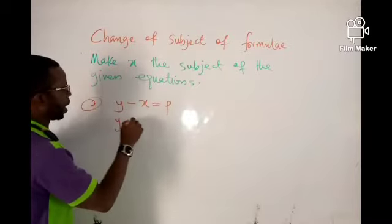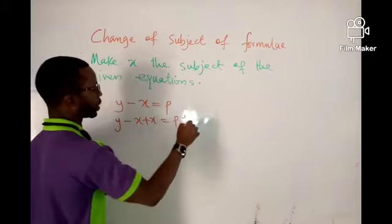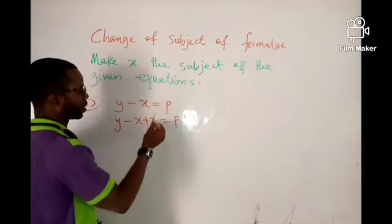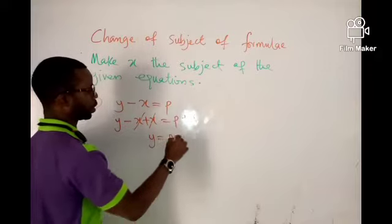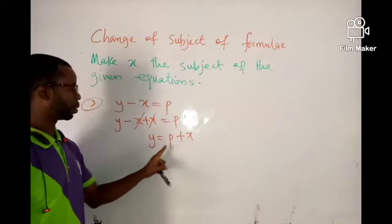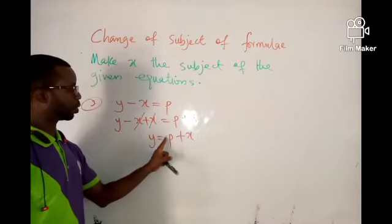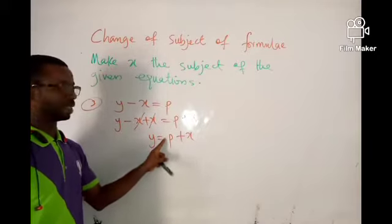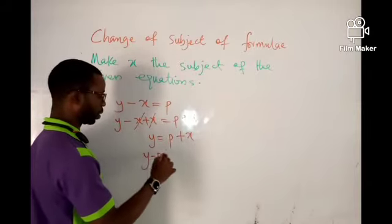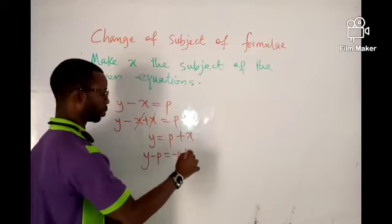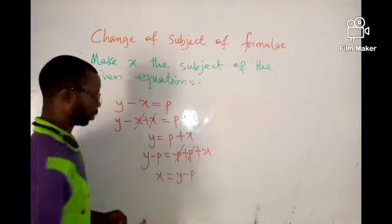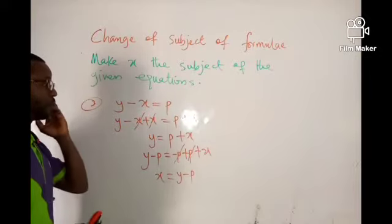Add x to both sides: y minus x plus x equals p plus x — whatever you do to one side, you do to the other because of the equality sign. This gives y equals p plus x. The x has become positive. Now take care of the p: use the reverse, which is minus p, on both sides, so minus p plus p cancels. In the end, x equals y minus p. That's the best and fastest way of doing it.